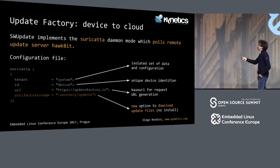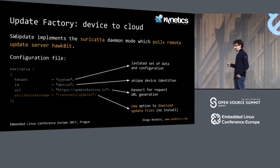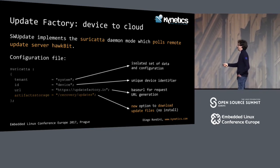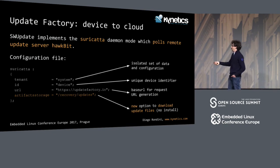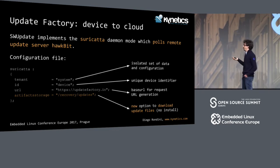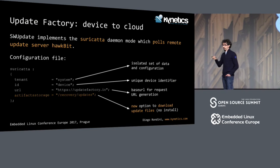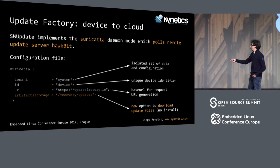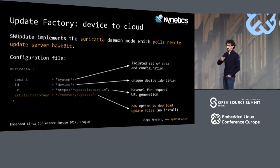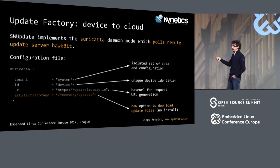What we changed in the daemon configuration is that we added the option to just download the files — by default, SWUpdate installs immediately what you downloaded. For example, when Hawkbit tells the device there is an update, it would just download and install immediately, but we wanted to store files in a special place. So we added this option. The patches are not upstream yet, but you can find them in our meta-updatefactory layer.